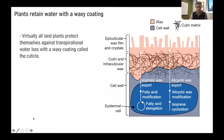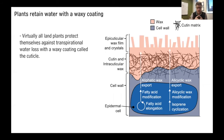Plants have a strategy to deal with this balance. They retain water inside their leaves and stems with a waxy coating. Virtually all land plants have this — they are protecting themselves against transpirational water loss with this waxy coating called the cuticle.